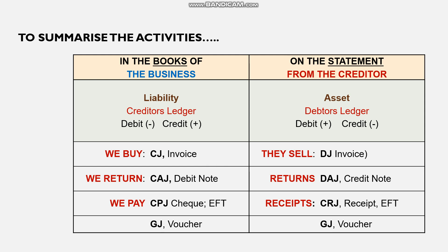When we return goods to the supplier, we complete a debit note — because we want to decrease the account in our books. The debit note is our document, focused on our business. We record the return in the creditors allowances journal. The reason we use a debit note is that we want to decrease the amount we owe them.